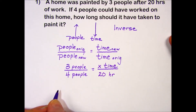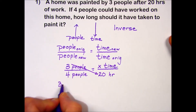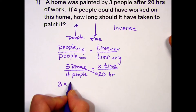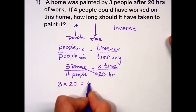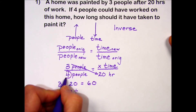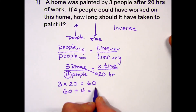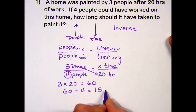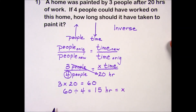We now have our proportion set up, so we can use cross multiplication to solve. We're going to take 3 times 20 — the diagonal containing the two numbers — which gives us a value of 60. We'll take that result and divide it by the remaining number to give us the value of our missing component. 60 divided by 4 is 15. So 15 hours would be the value of X — less time with more people.